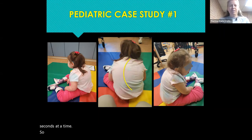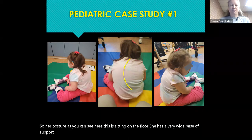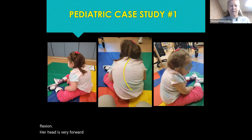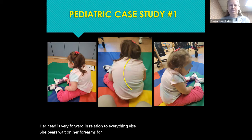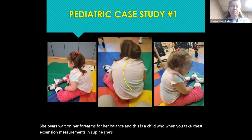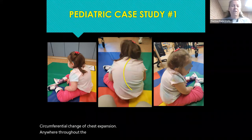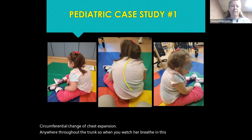Looking at her posture in floor sitting: she has a very wide base of support, visible collapse with her curve into right lateral flexion, her head very forward, and she bears weight on her forearms for balance. When you take chest expansion measurements in supine, she is primarily a diaphragmatic breather. However, when she's sitting in this collapsed position, there is no appreciable circumferential change in chest expansion anywhere throughout the trunk — most of her breathing becomes superior when you watch her in this position.